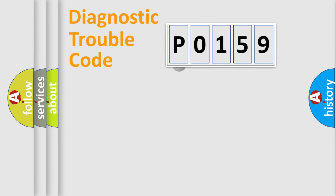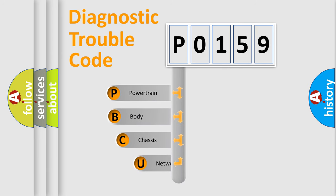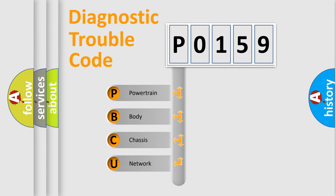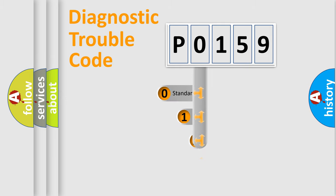First, let's look at the history of diagnostic fault code composition according to the OBD2 protocol. We divide the electric system of an automobile into four basic units: powertrain, body, chassis, and network. This distribution is defined in the first character of the code.